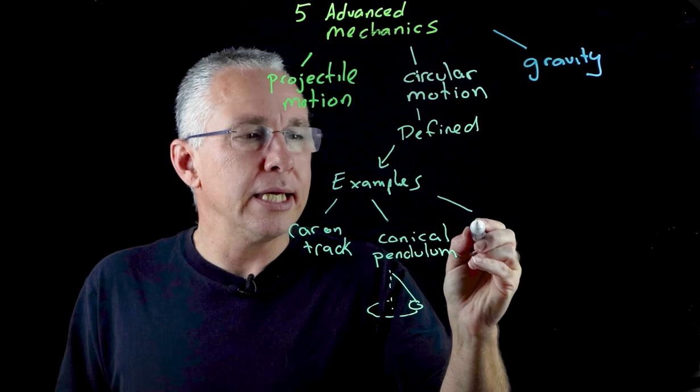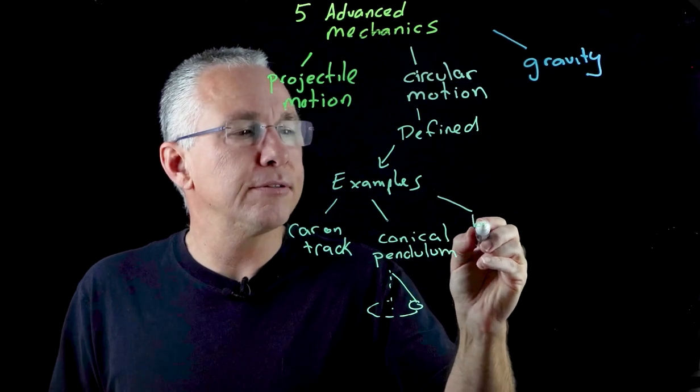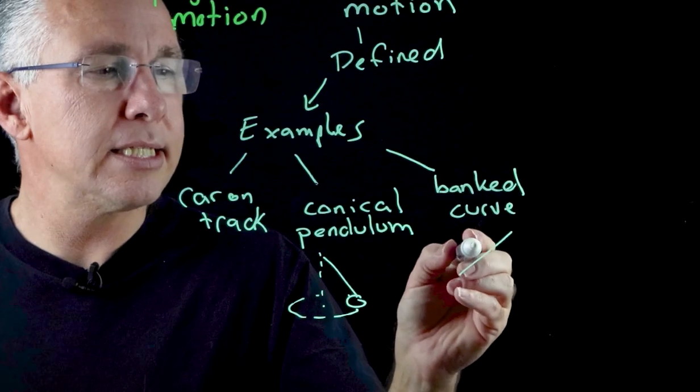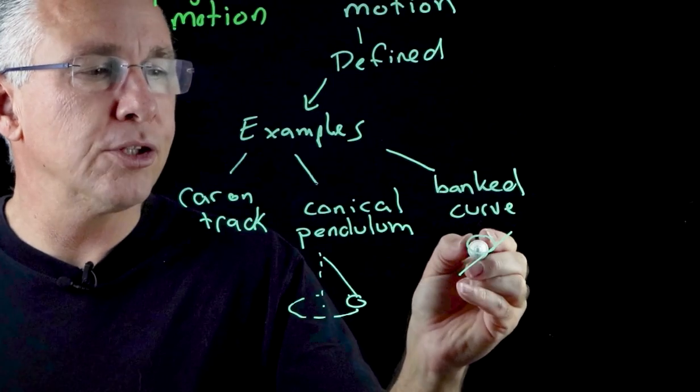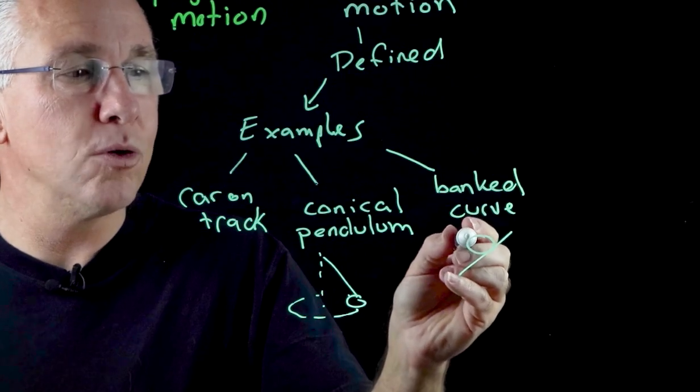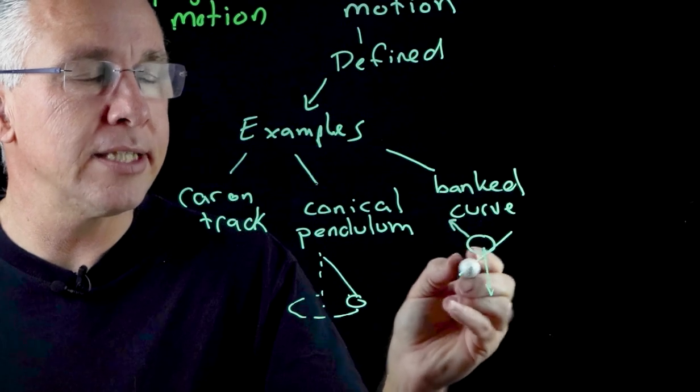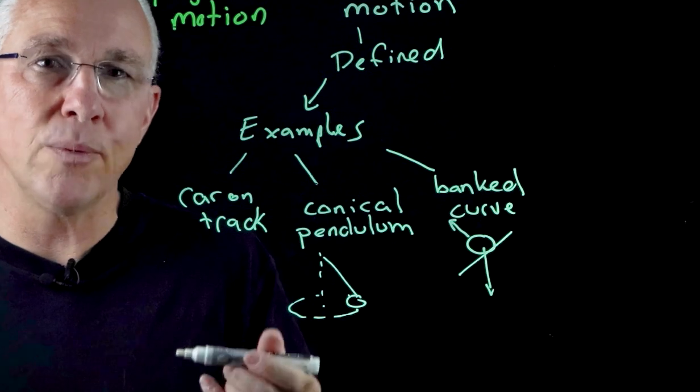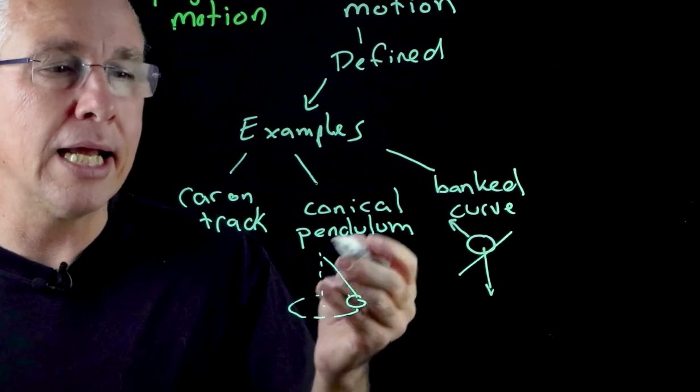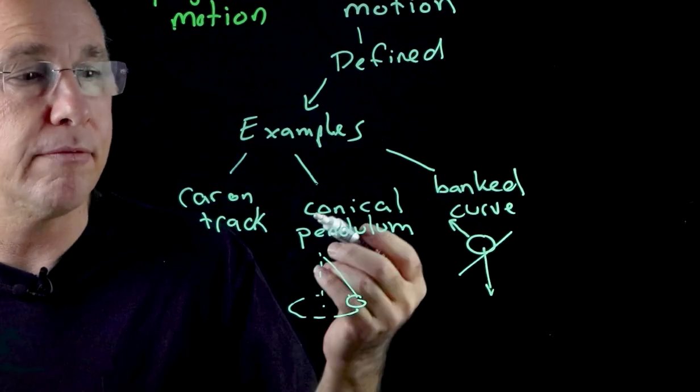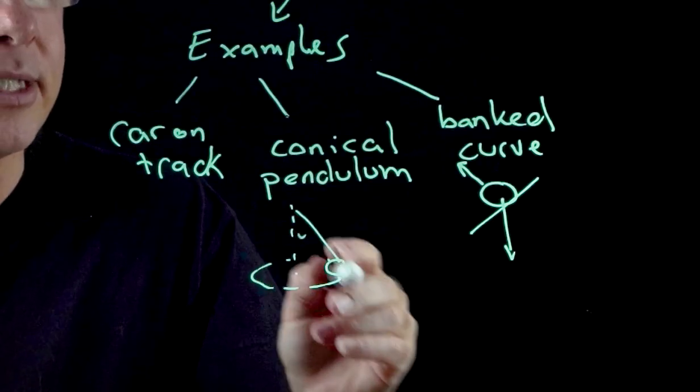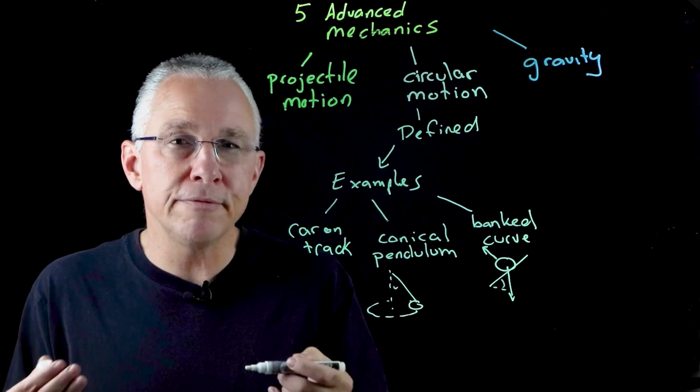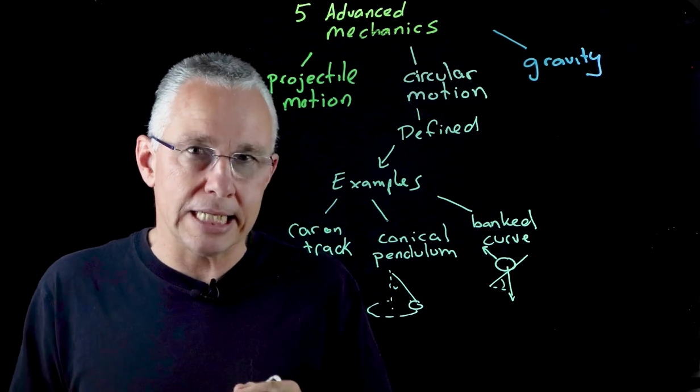And the third example we need to look at is what we call a banked curve. This ties in with our car on the track, but now we have a car sitting on a banked curve. Therefore we have the normal force acting in that direction, we have the gravity in that direction, and the resultant is a force in towards the circle. Again what we have is centripetal forces being applied, and as a result when you analyze that situation you can actually work out the velocity required for any particular angle. Again I encourage you to have a look at my videos on banked curves for greater analysis of that.